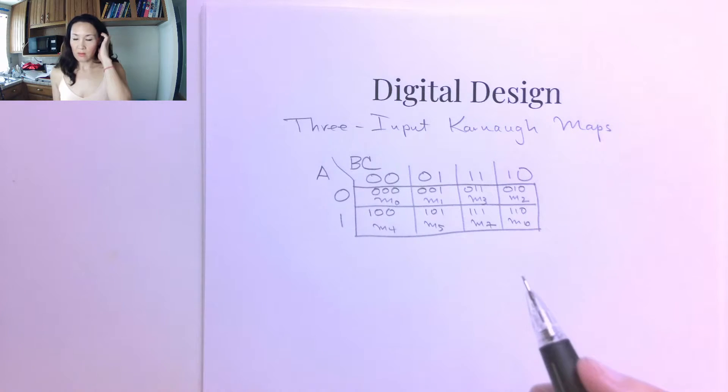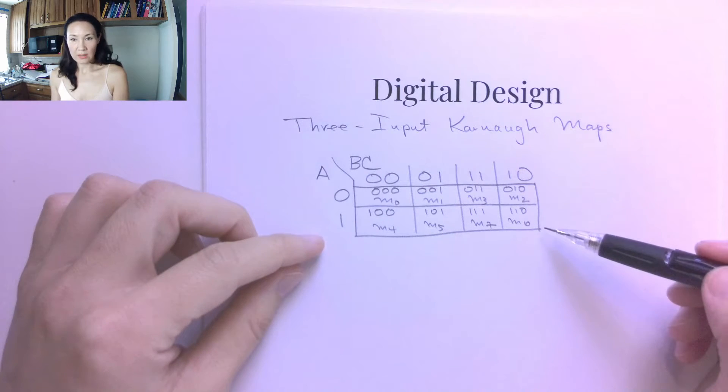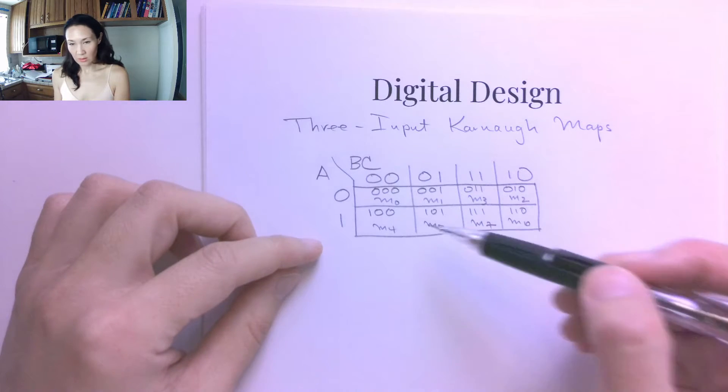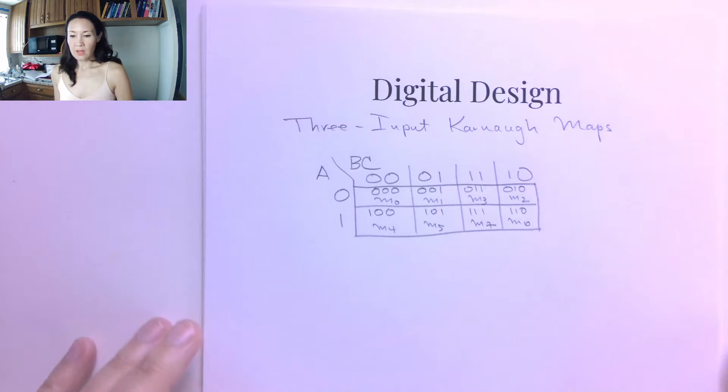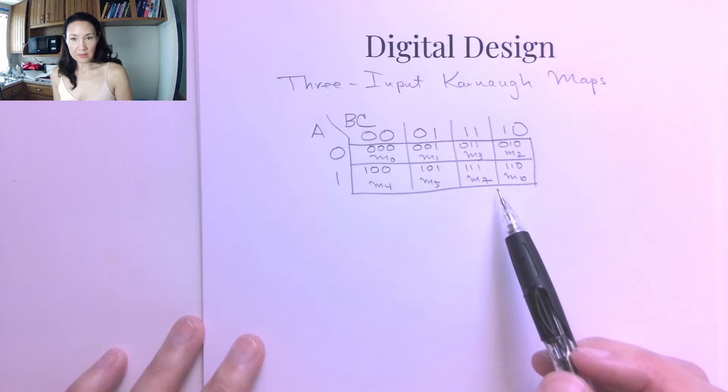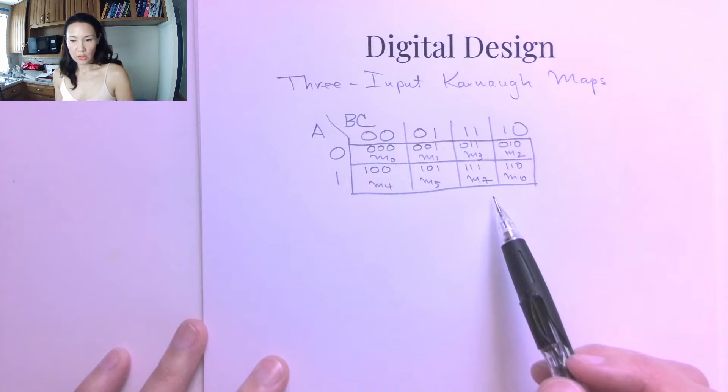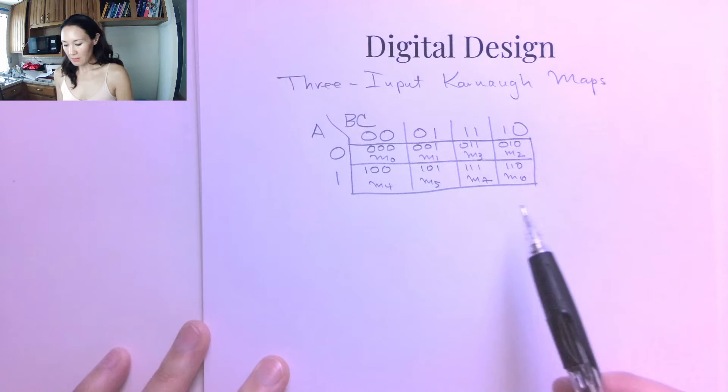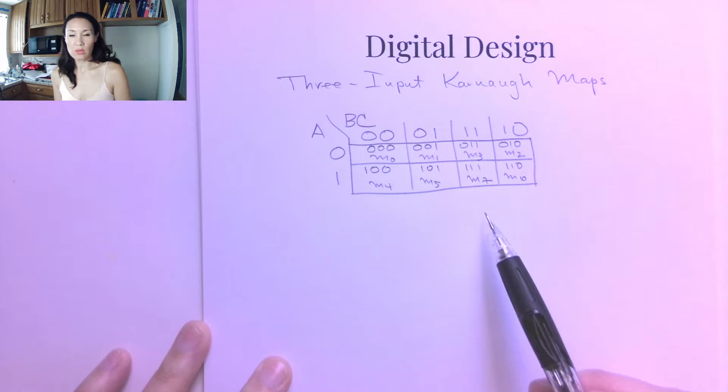So if you are making a Karnaugh map from a truth table, then make sure that you get the positions correct so that you put your outputs in the correct cells. Now for larger K-maps like this as opposed to just the two input K-map, like I mentioned before, there's different ways we can do the bit grouping.